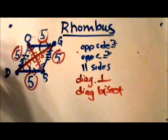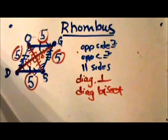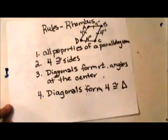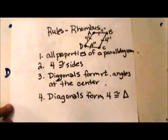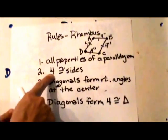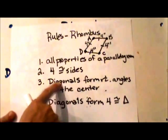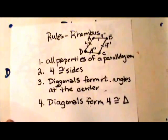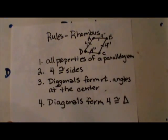I hope this video has been helpful. To summarize, a rhombus has all the properties of a parallelogram, plus four congruent sides. The diagonals form right angles at the center, and the diagonals form four congruent triangles that reflect upon each other.